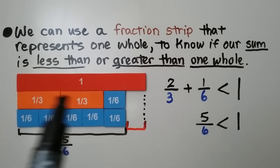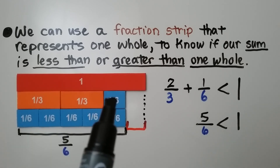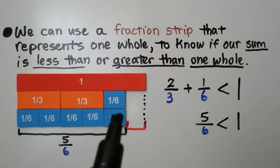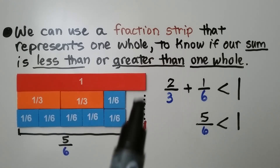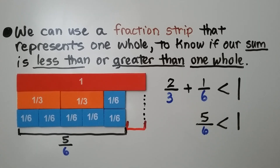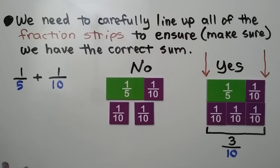We have 2 thirds plus 1 sixth. It's equal to 5 sixths. We can see it's less than one whole — 5 sixths is less than one whole. We need to carefully line up all of the fraction strips to ensure, that means make sure, we have the correct sum.